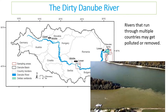Water stress can also be linked to different countries and political issues. Water doesn't always flow through just one country — for example, the Danube River flows through multiple countries in Europe and gets gradually more polluted as it does. So water stress isn't only about the lack of water; it's also about the quality of water deteriorating as it travels downstream.